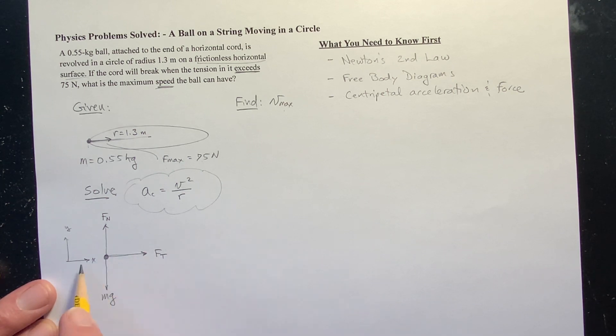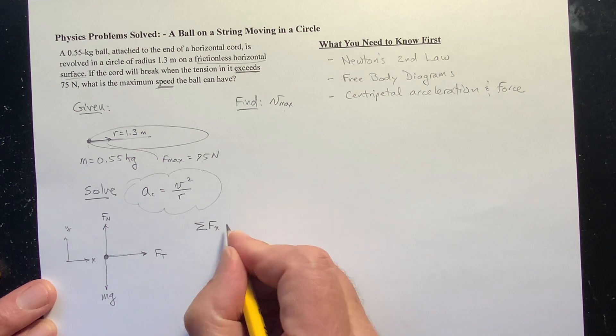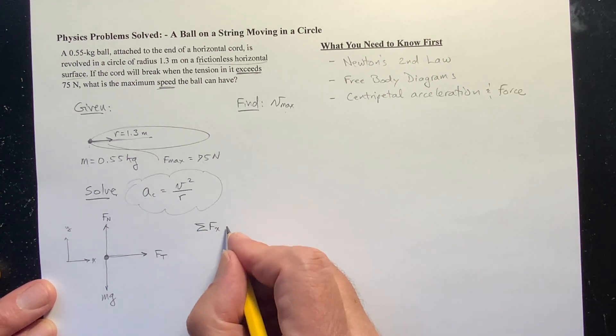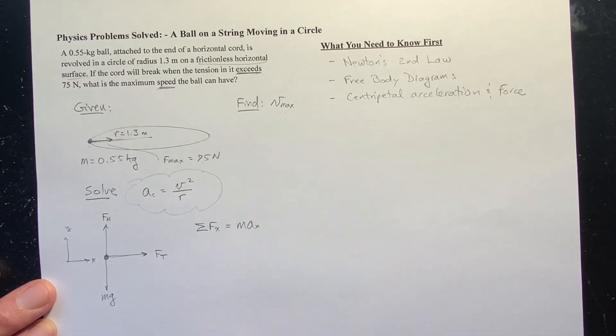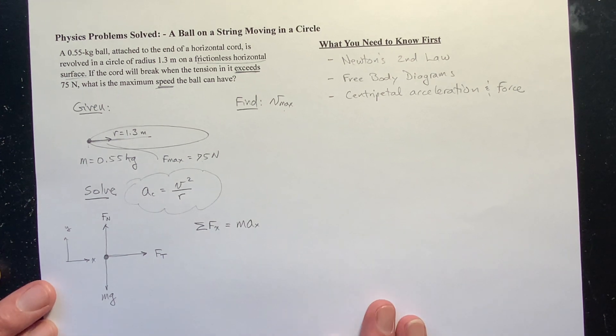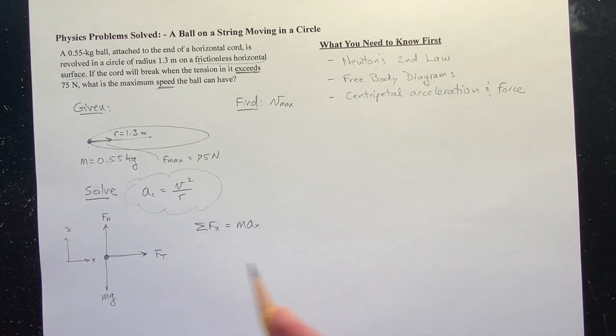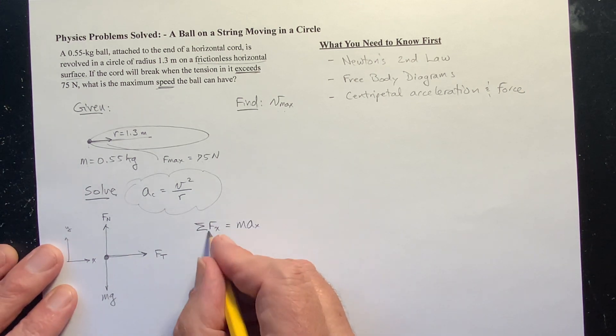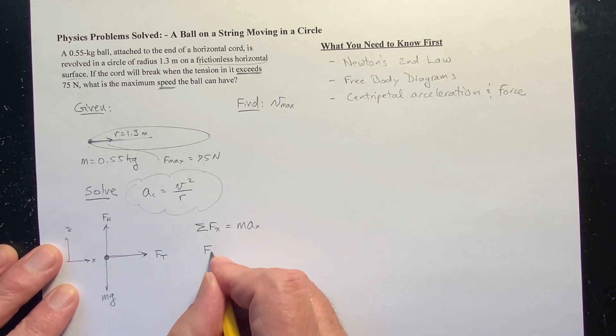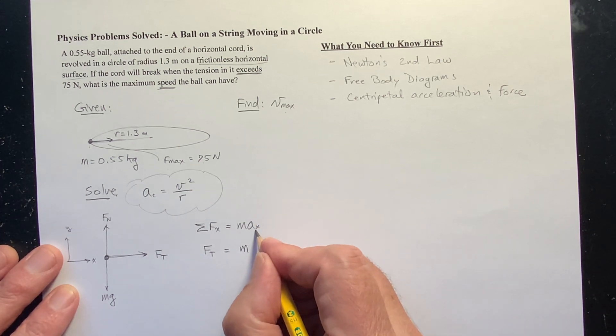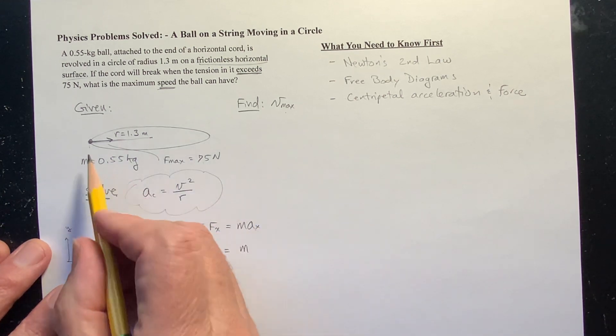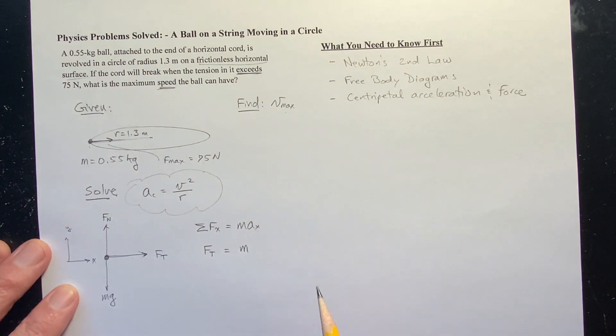But here is a net force, and that's in our x direction. So I will sum the force in the x direction. That's what the net force in the x direction is, and that's equal to the acceleration in the x direction. Well, there's only one force in the x direction, right? There is this one. So the net force in the x direction is really this tension force. And this is going to be equal to the mass.